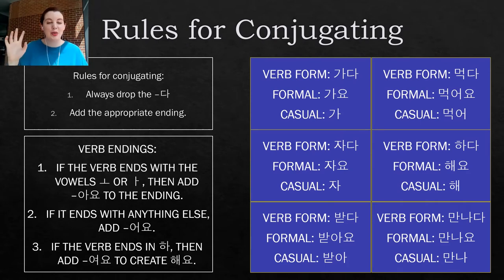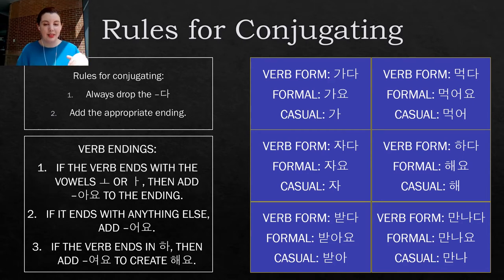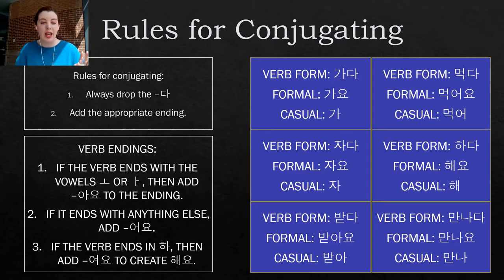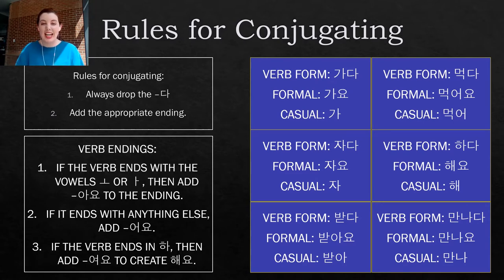The first thing we're going to do is drop 다, and then we're going to add the appropriate ending. Just like we learned in last week's video: if the verb ends with the vowels O or A, then we add the 아요 ending. If it ends with anything else — literally anything else — then add 어요. But if the verb ends in 하, then we add 여요 to make 해요. This is the present tense conjugation, just as a reminder.